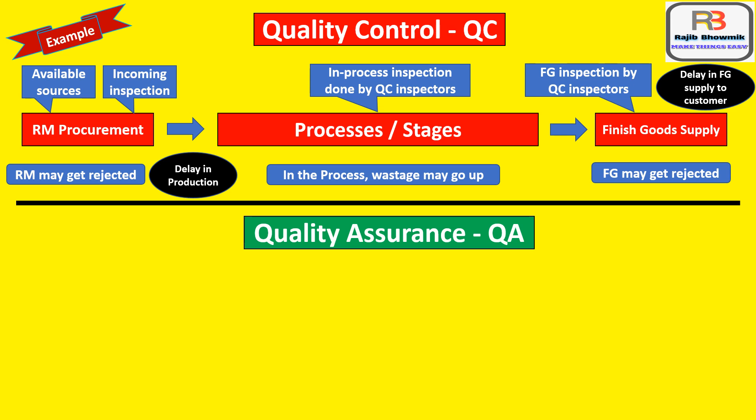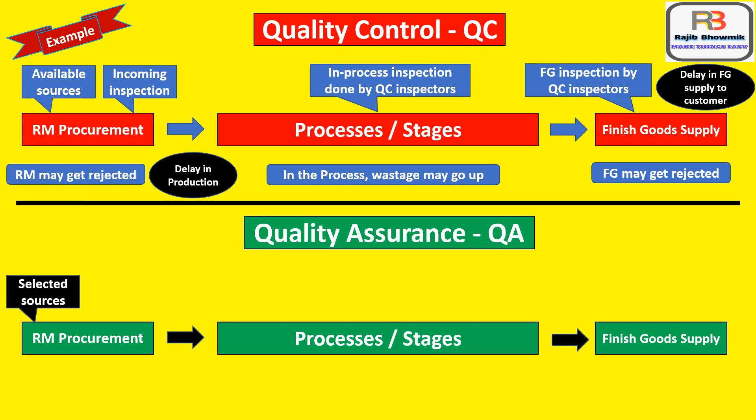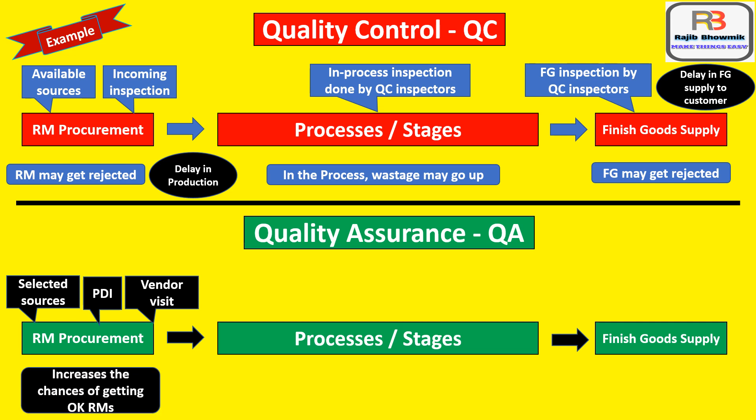Now we will see the same scenario in quality assurance. In a quality assurance scenario, raw materials are procured from selected sources. PDI — that is pre-dispatch inspection — is done so that raw materials are not rejected after receiving. Then frequent vendor visits are done by purchase people and quality assurance people, which increases the chances of getting OK raw materials at the factory.